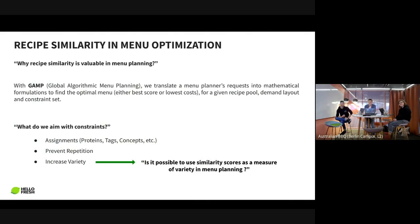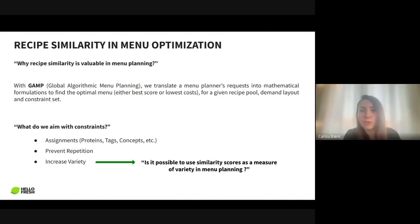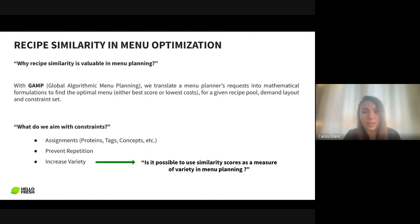I'd like to let Jansu continue on recipe similarity in menu optimization. Thank you, Samet, for explaining the recipe similarity tool in such detail. I will walk you through the menu optimization part where we use similarity scores. I'm an operations researcher in upstream analytics. With GAMP, our menu optimization tool, we try to find the optimal menu allocation from a given recipe pool, a demand layout, and a set of constraints.